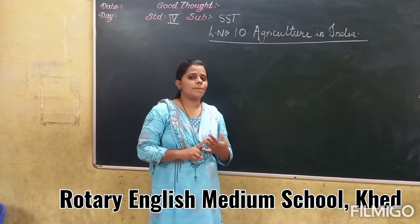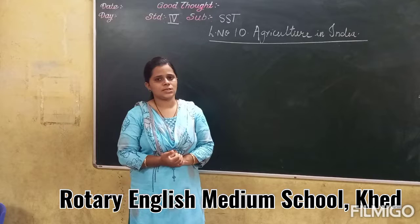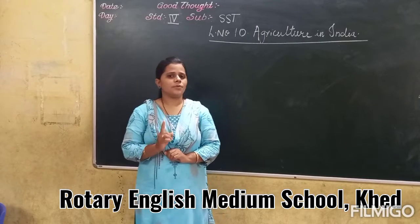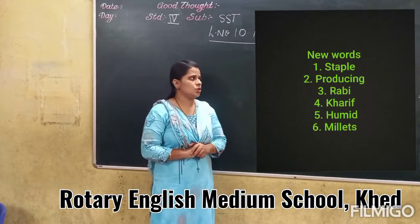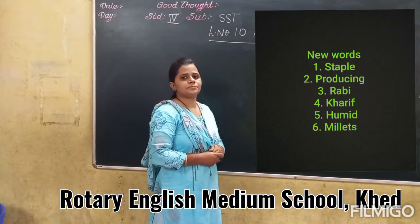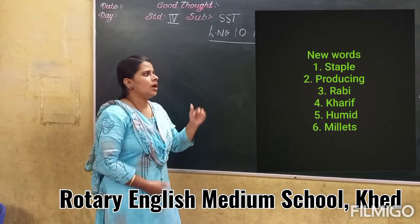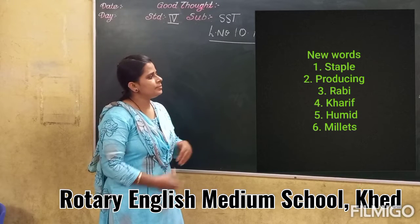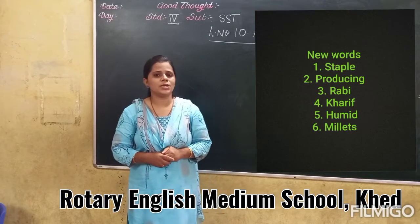Now let's talk about pulses. Pulses are grown in different states. There are different types of pulses like moong, arhar, chana dal, etc. Today's new vocabulary words include: Rabi crop, Kharif crop, millets, and staple food. Read the textbook, underline the important points, and note these vocabulary words.